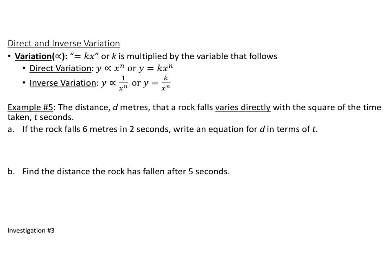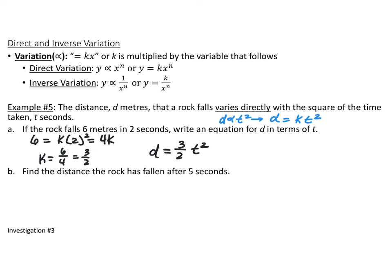In example 5, the distance d (meters) a rock falls varies directly with the square of time t. This means d = kt². Given that the rock falls 6 meters in 2 seconds, plug in d = 6 and t = 2: 6 = k(4), so k = 3/2. The equation is d = (3/2)t². Using that, the distance after 5 seconds is (3/2)(25) = 37.5 meters.